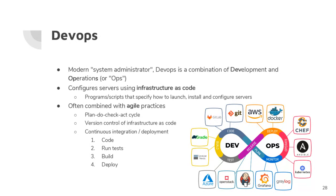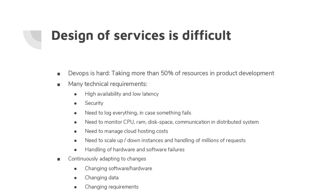The old classical waterfall approach in software engineering is slower: two months to plan, two months to write software, two months to release, then many bugs to fix. The agile DevOps idea is to do it quickly and online in an organized way. In product development, DevOps takes more than 50% of resources and man-hours.